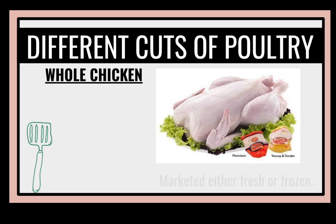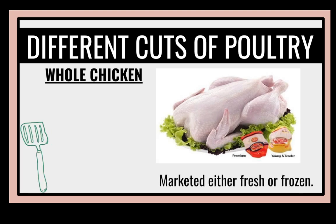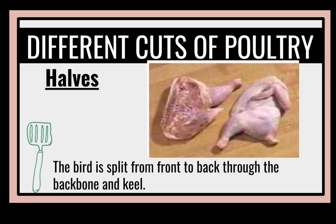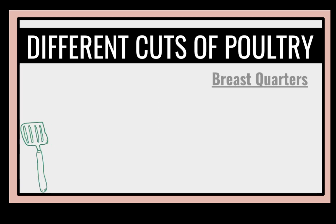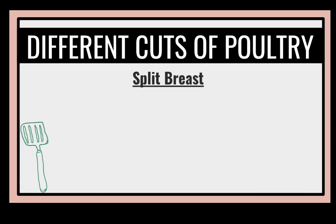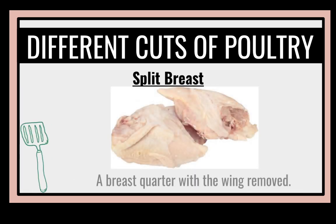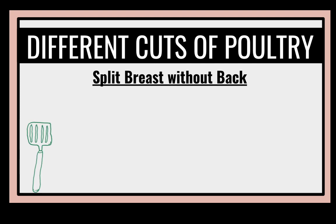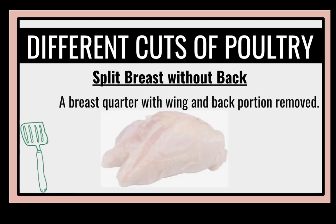Different cuts of poultry include whole chicken, which is marketed either fresh or frozen. Halves: the bird is split from front to back through the backbone and keel. Breast quarters: halves may be further cut into which include the wing. Split breast: a breast quarter with the wing removed. Split breast without back: a breast quarter with wing and back portion removed.